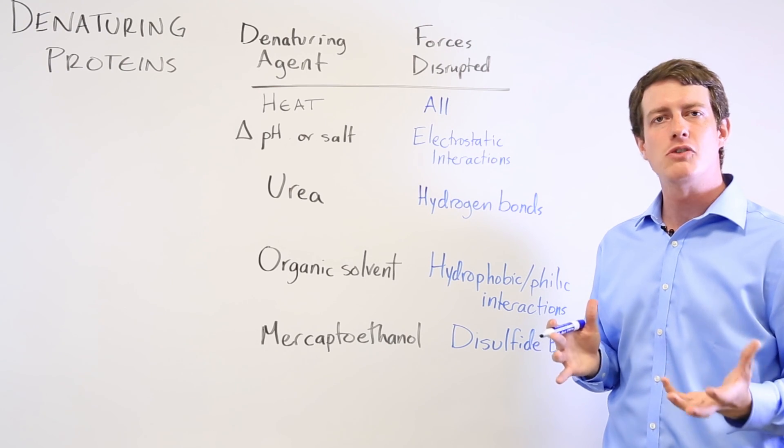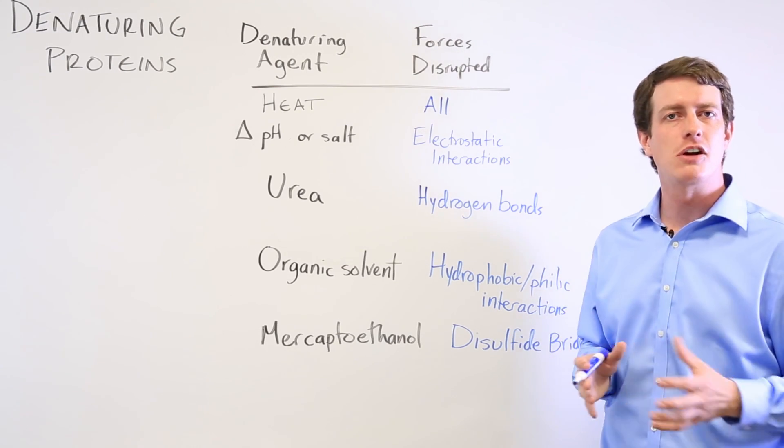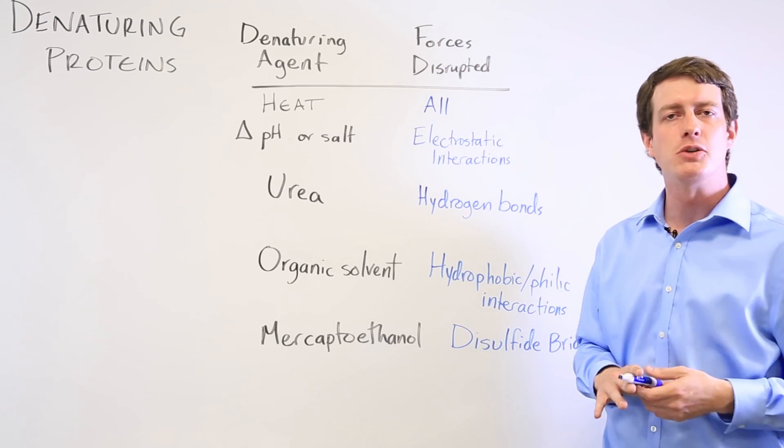And so when you see denaturing questions on the MCAT they'll often ask you what level of protein structure is being disrupted by changing the environment that this protein is found in.